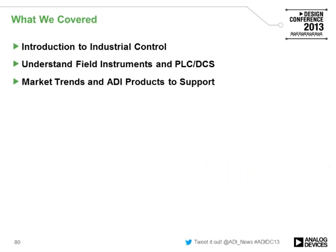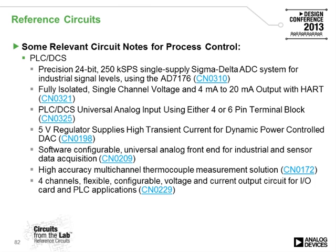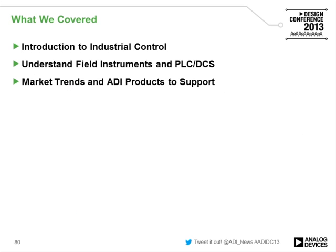In conclusion, we've given some introduction to industrial control. We've discussed field instruments and PLC/DCS input and output modules. We've discussed some of the market trends: smaller form factors, higher efficiencies, as well as ADI products to support this. We also have a number of circuit notes and collateral available — transmitter and PLC/DCS circuits available for evaluation purposes. Thank you.